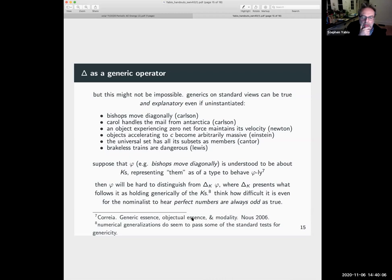So how are you going to understand a claim like bishops move diagonally? Well, it's intuitively understood to be about a certain kind of object, the case, chess pieces, or chess pieces of a certain sort. It represents them as of a type to behave phily, where phi is the sentence coming after delta. In this kind of case where the sentence is heard as saying what it is for a certain type of object to behave phily, like perpetual motion machines are machines that blah, blah, blah, it'll be hard to distinguish phi from the sentence that it lies in the nature of k's to phi, where delta k presents what follows it as holding generically of the k's.